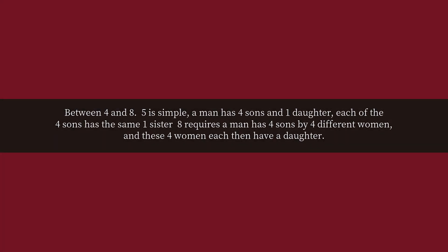Between four and eight. Five is the simplest answer: a man has four sons and one daughter, and each of the four sons has the same one sister.